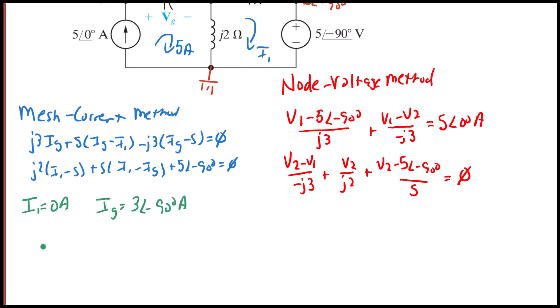And so to solve for VG, VG is going to be negative J3 times five minus IG. So VG is equal to 17.49 with an angle of negative 59 degrees.